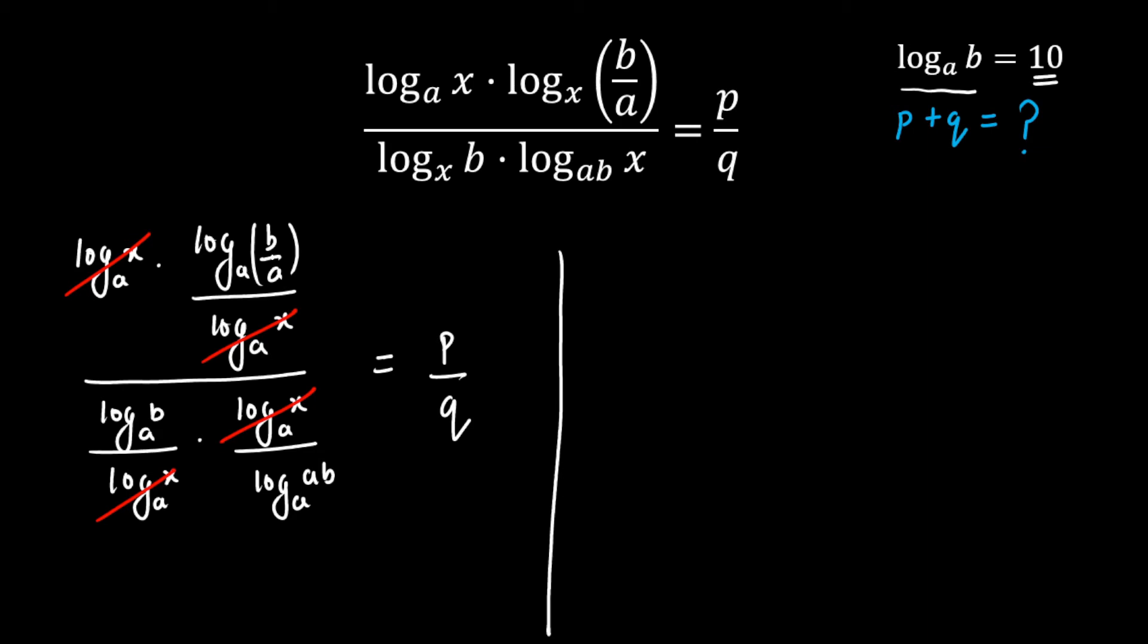Now as you can see here I can apply log ab property, so I can write this as log b to the base a minus log a to the base a - this is remaining in the numerator. In denominator, this term will jump into numerator. I'm going to apply log ab property - that is log b to the base a plus log a to the base a. In denominator one term is remaining, that is log b to the base a, and this is given as p by q.